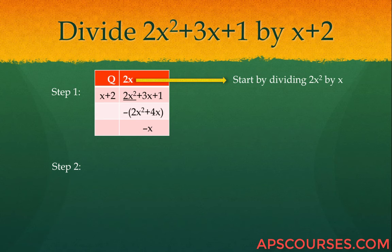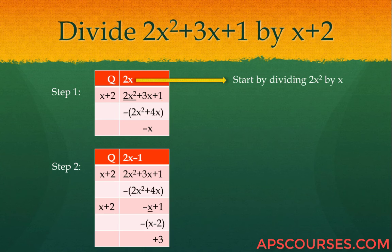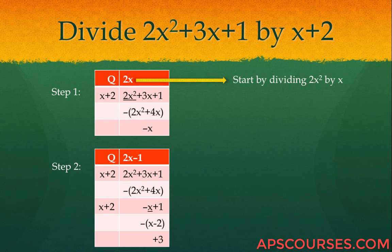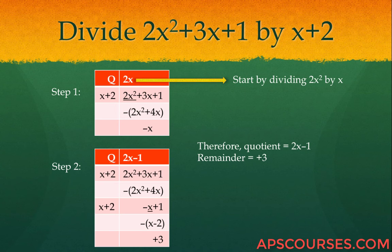Multiply 2x by the second term of the divisor, which is 2, to get 4x. So you have 2x squared plus 4x, and you subtract that. Subtracting gives minus x. In step 2, carry down the remaining term plus 1. The first term of the new dividend is minus x — divide by x to get minus 1 on top. Multiply minus 1 by the second term of the divisor and subtract. The final remainder is plus 3. The quotient is 2x minus 1 and the remainder is 3.